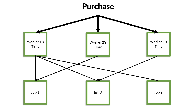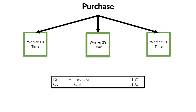It's almost exactly the same as materials. We start the process by purchasing — we pay it off with cash. So we credit cash or maybe accounts payable, and we debit factory payroll, which is an expense account, something like salary expense. We call it factory payroll — it's where we keep all the expenses we've incurred on our workers for their time.